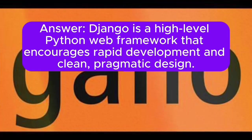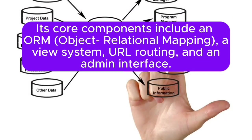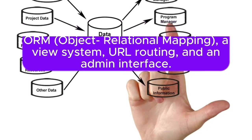Answer: Django is a high-level Python web framework that encourages rapid development and clean, pragmatic design. Its core components include an ORM (object relational mapping), a view system, URL routing, and an admin interface.